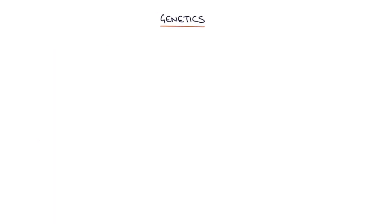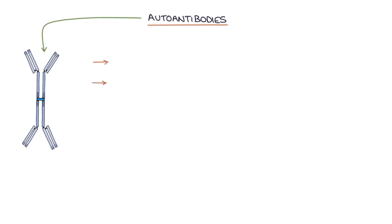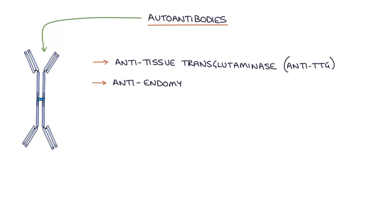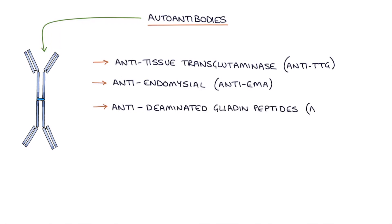There are two genes associated with celiac disease: HLA-DQ2, which is the most commonly associated gene, and the second is HLA-DQ8. There are three autoantibodies associated with celiac disease. The first two you really need to remember are anti-tissue transglutaminase (anti-TTG) and anti-endomysial antibodies (anti-EMA). The third is deamidated gliadin peptide antibodies, but these are less commonly found in exams and in real life.